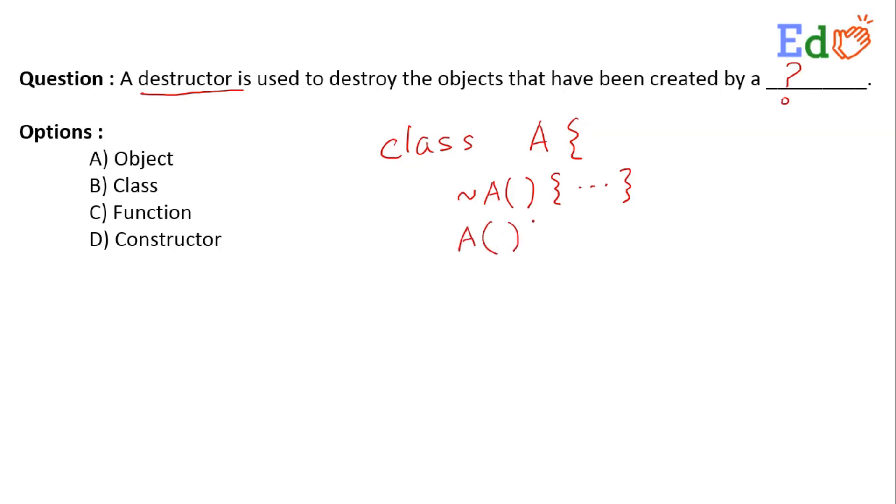On the other hand, constructor is that method whose name will be same as that of the class name, and this particular constructor will be executed whenever an object will be allocating some memory spaces, or instantiation of the object will take place in the computer's memory.